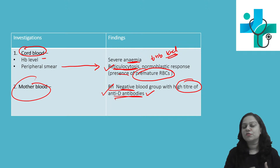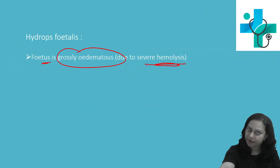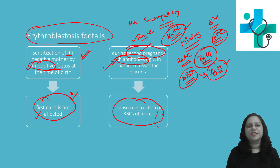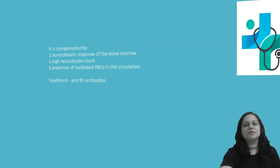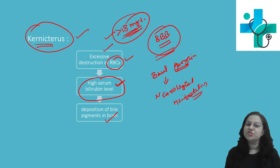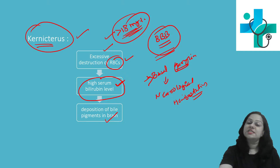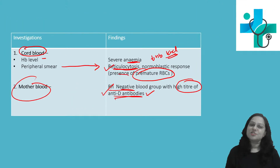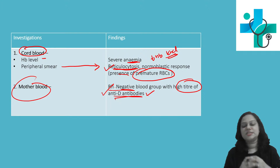We can conclude that hemolytic disease of the newborn can be of three types according to severity: erythroblastosis fetalis; then the more severe form, kernicterus, where serum bilirubin level is more than 18 milligram percent causing deposition of bilirubin in the brain, specifically the basal ganglia, which brings neurological manifestations; and hydrops fetalis, which is an extremely severe form. These are the investigations which can be done to diagnose hemolytic disease of the newborn.